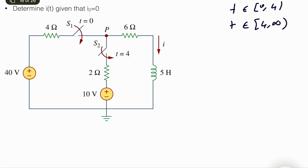When analyzing the first part we will technically ignore the second part — we will assume that the circuit will go to infinity no matter what will happen later. But of course at t equals 4 we will activate the switch and change the dynamics, though it can't affect the behavior before t equals 4.